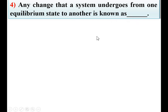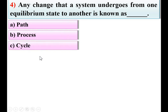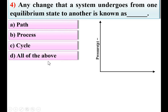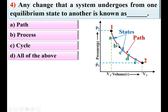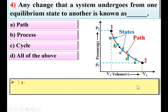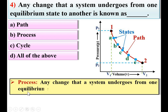Next: any change that a system undergoes from one equilibrium state to another is known as — options: path, process, cycle, all of the above. On a pressure-volume diagram, the initial and final states are equilibrium states. Any change from equilibrium state 1 to equilibrium state 2 is known as a process. So B is the right answer.